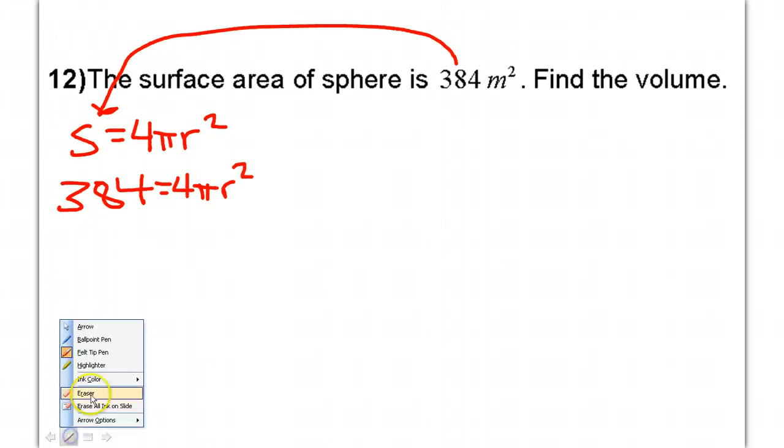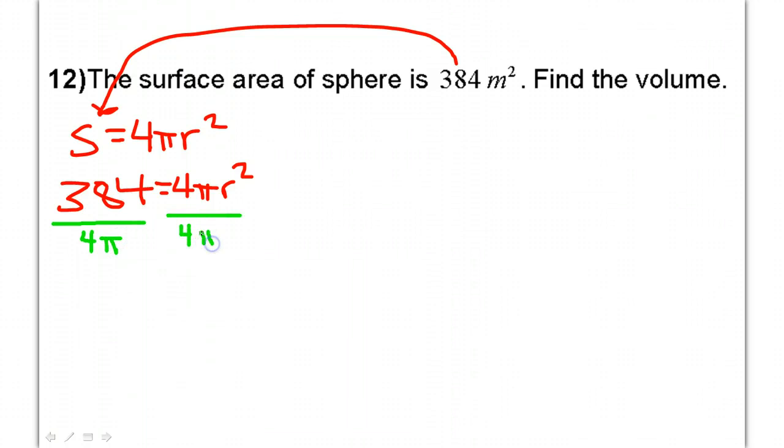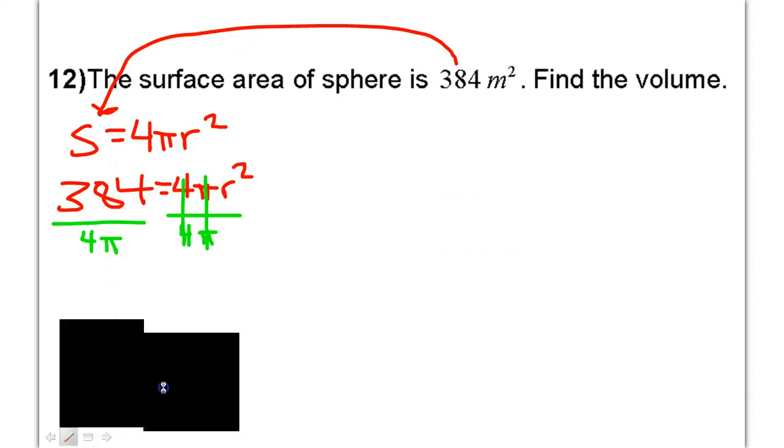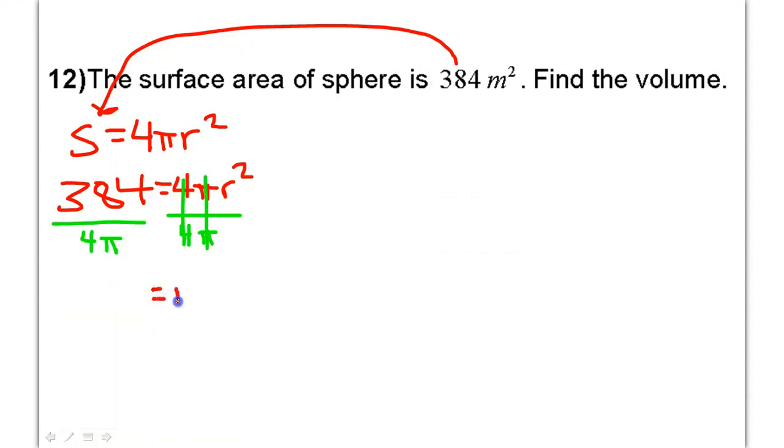We're going to divide both sides by 4 pi, that way these cancel out. That's going to give me r squared equals. I'm just going to leave it like this for a second so I don't have any unnecessary decimals.